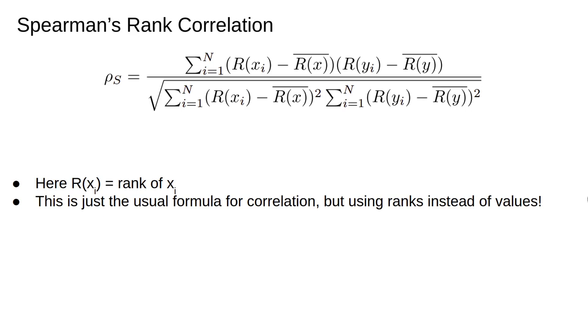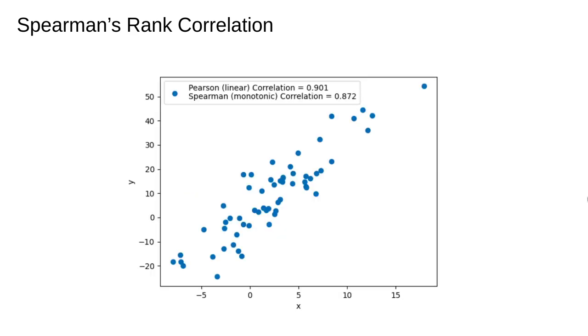Now let's see how linear correlation, also called Pearson correlation, compares to rank correlation, which is also called Spearman correlation. Here are some data which is roughly linearly related. For this kind of data, Spearman's and Pearson's correlations are very similar. In this case, it doesn't really matter which one you use.